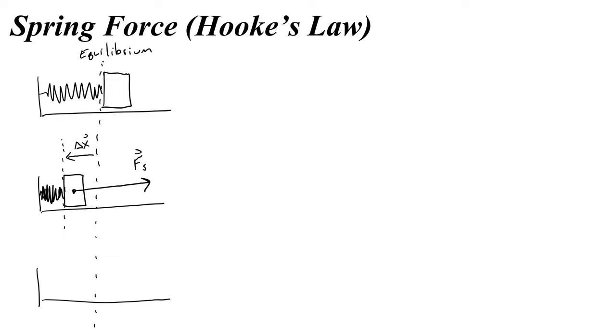Now below, let's draw what would happen if the box was to the right, meaning it was stretching the spring. We're assuming that this box and the spring are like glued together. So now the spring is stretched out, and it's actually going to be pulling the box backwards to the left. So we'll call that the spring force. Notice that our displacement from equilibrium now is to the right, delta x.